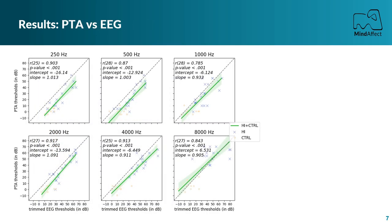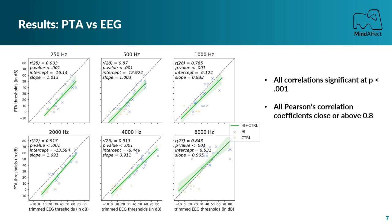To compare the two methods, we performed a linear regression analysis reporting the Pearson correlation coefficient, the slope and intercept of the regression, and the p-value. By comparing the PTA thresholds and the EEG thresholds using only 5.5 minutes of data, we found significant correlation at p below 0.001 and a Pearson correlation close to or above 0.8, indicating a strong linear relationship between PTA and EEG thresholds.